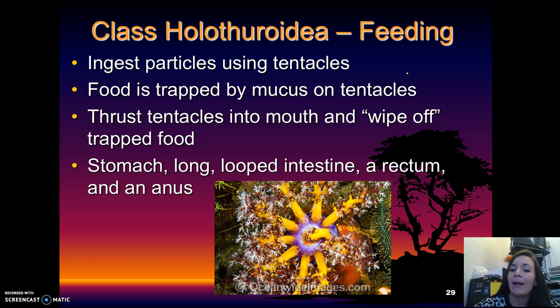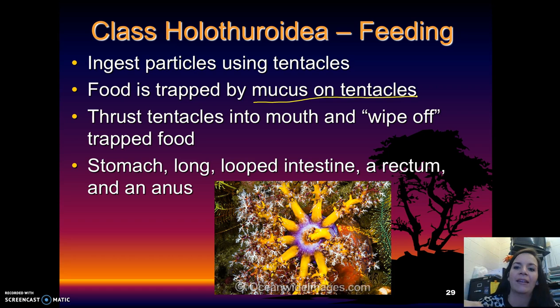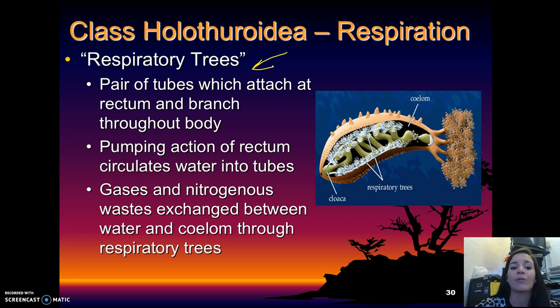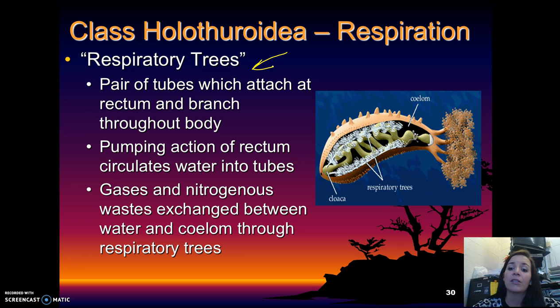For feeding, they use specialized tentacles around their mouth to ingest particles. Food is trapped by mucus on the tentacles, and they put the tentacles into their mouth to wipe off the food. They have a stomach, a long looped intestine, a rectum, and an anus — a more elongate system than the sea stars. Their respiration is also different: they use respiratory trees, which are pairs of tubes attached at the rectum that branch throughout the body. They pump water into the tubes through the rectum, allowing gas and nitrogenous waste exchange between the water and the organism.